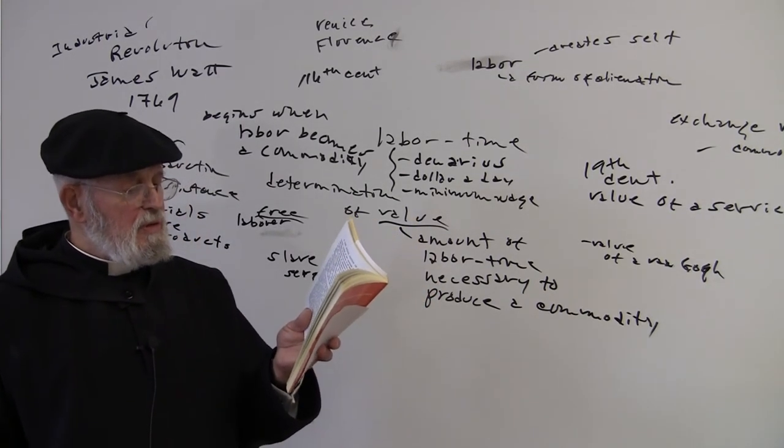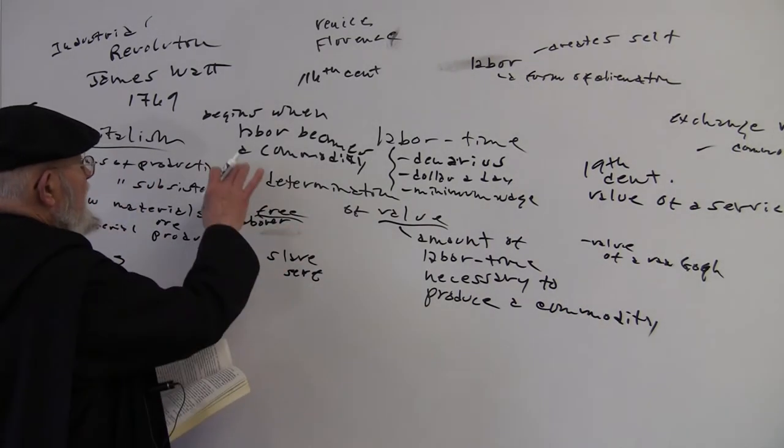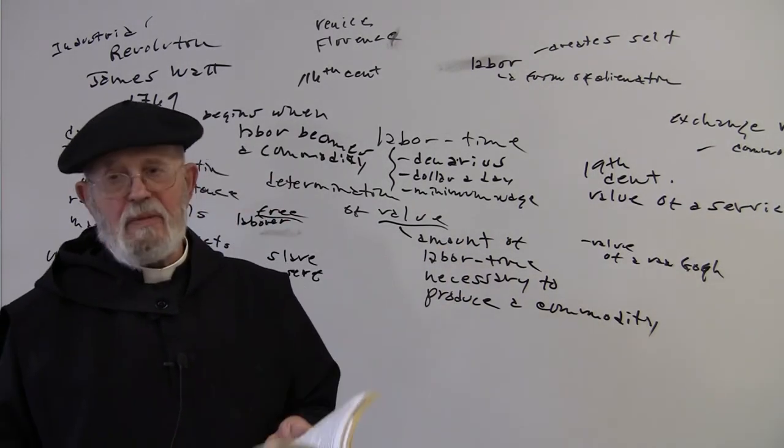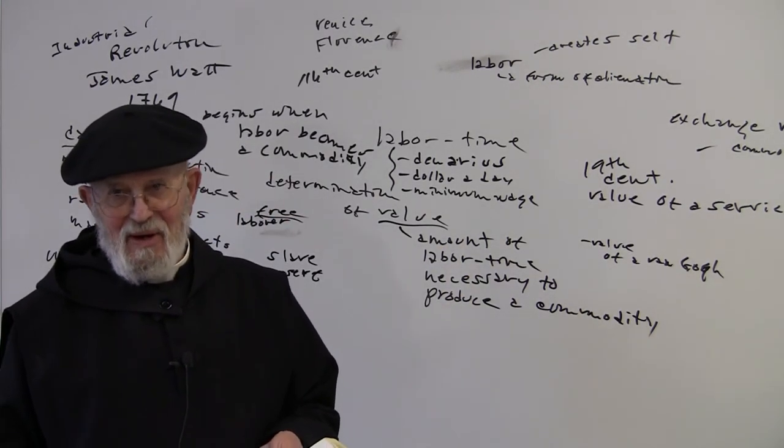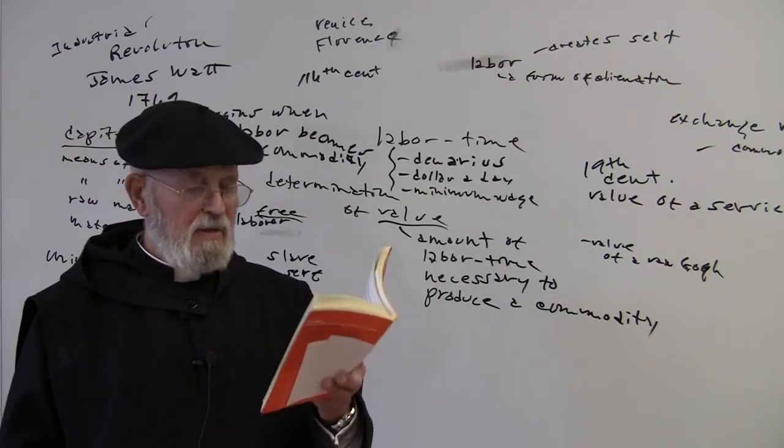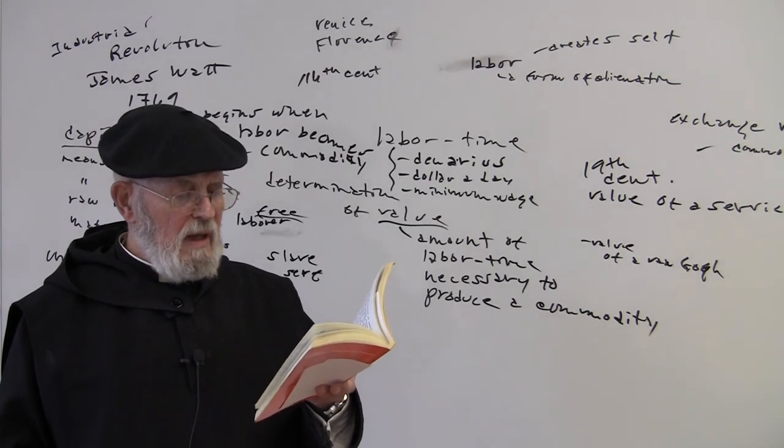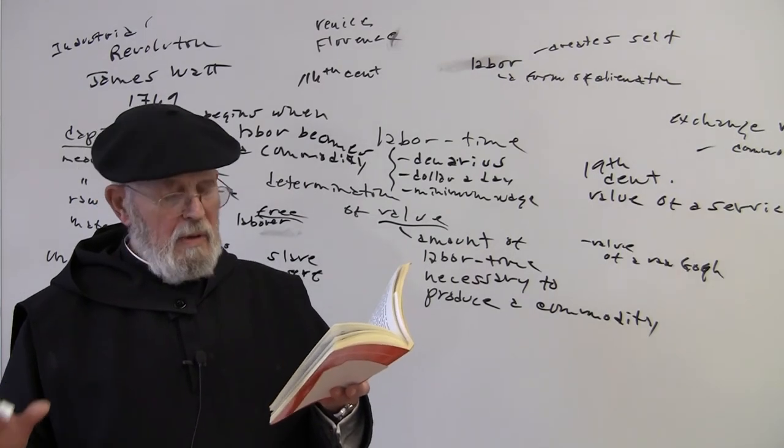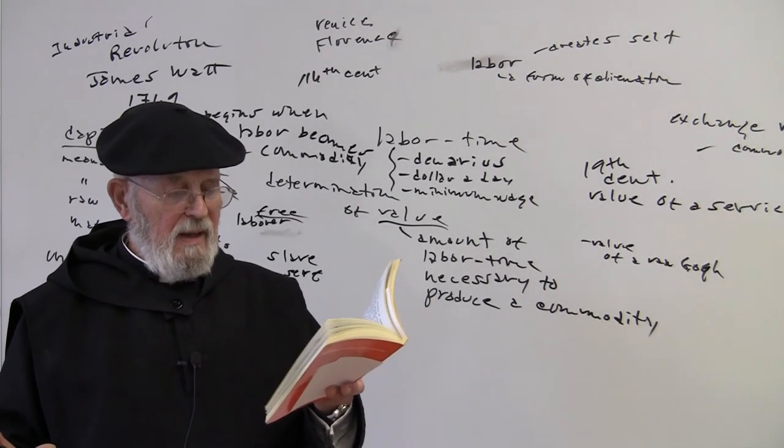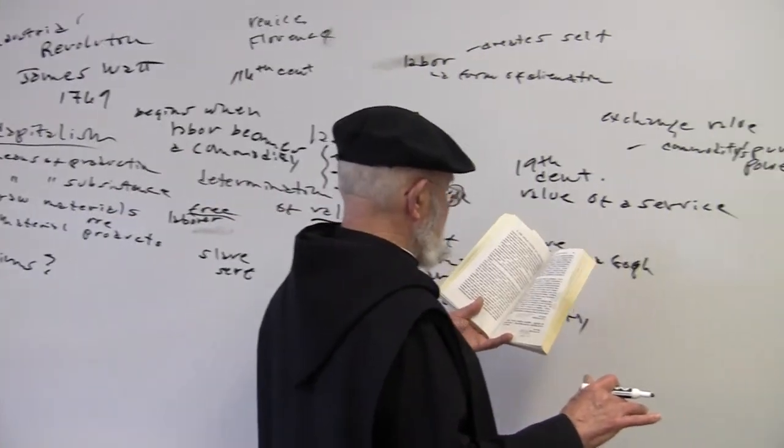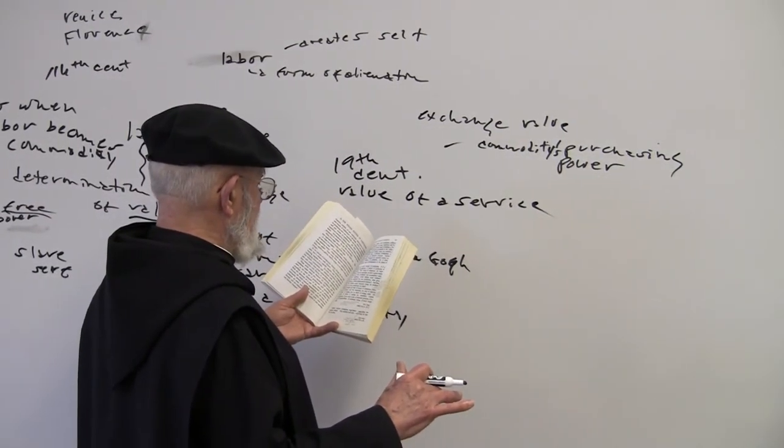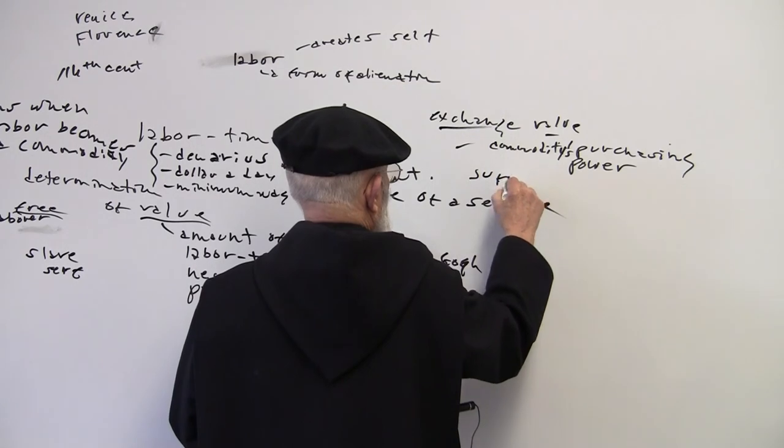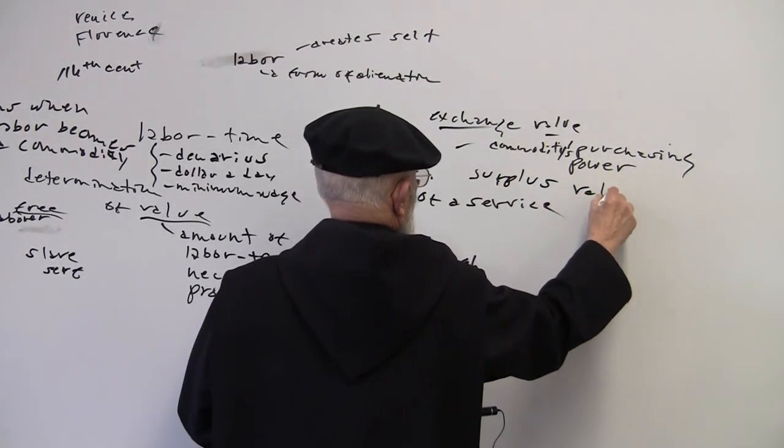Capital therefore presupposes wage labor. You need the laborers. Wage labor presupposes capital. You haven't got a wage laborer unless you've got a capitalist willing to pay the wage. They condition each other. Each brings the other into existence. So what's the wage laborer? Remember, labor creates value. And how? It creates capital by exchange value and surplus value.